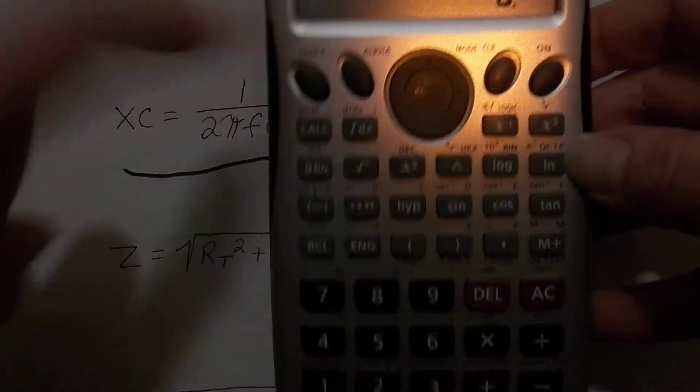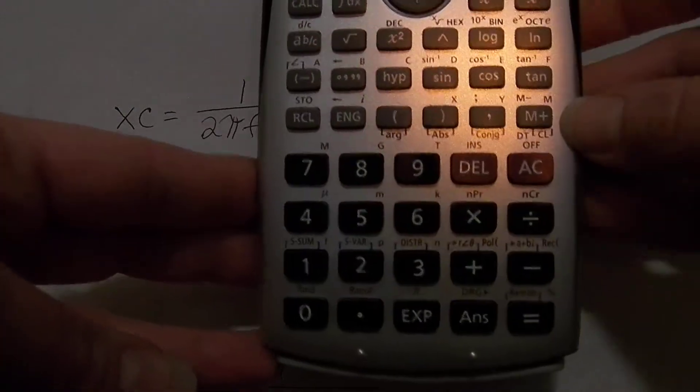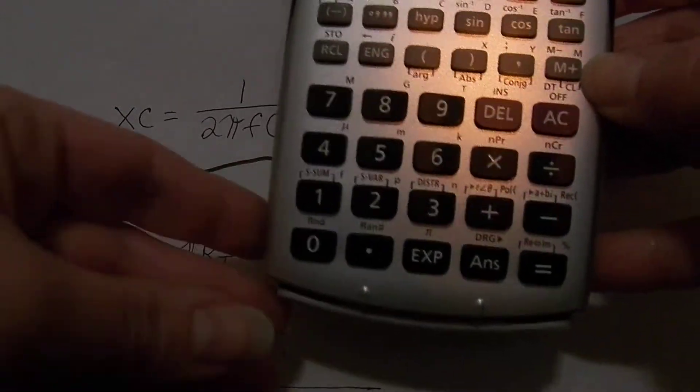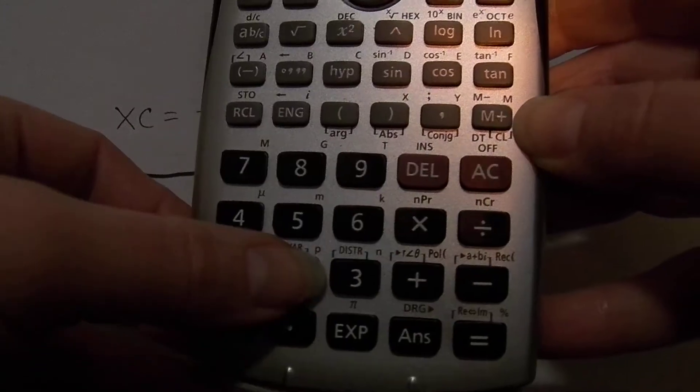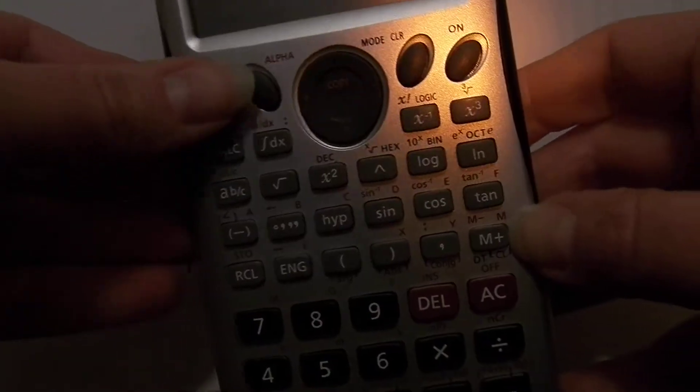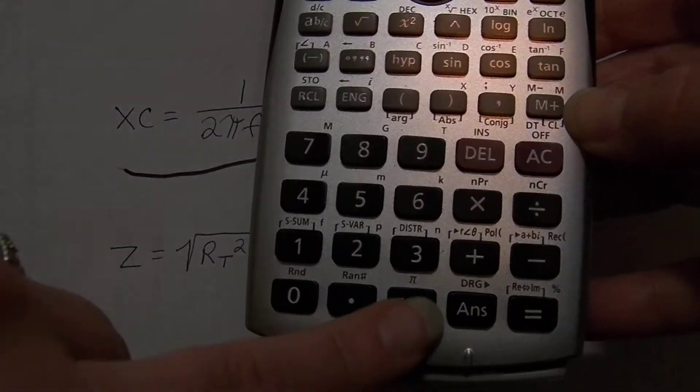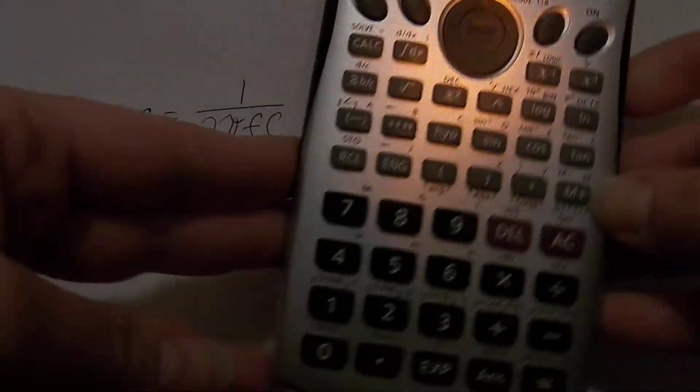So we'll show you the other one this way. So we're going to take 2π. So if you were to do 2π, you would take 2, shift, and you'll see your π right there above the exponent. And you can look and see, and right there is 2π times—we said 10k. So we're going to take 10.